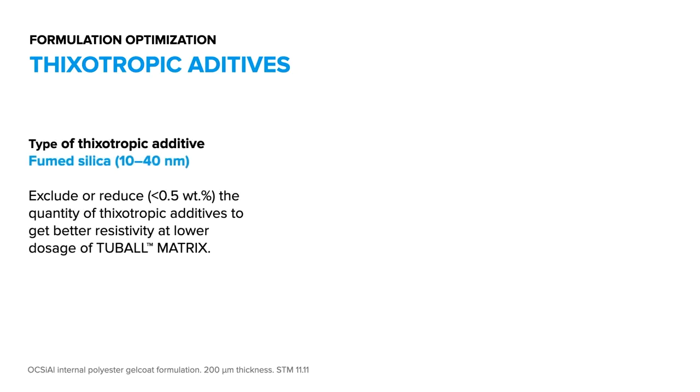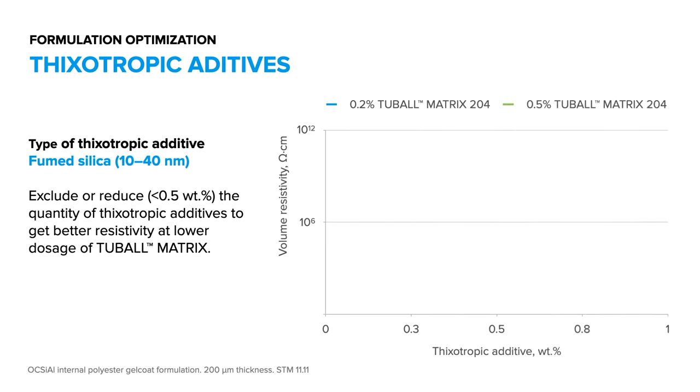Also, try to reduce the loading level of your thixotropic additive to get lower resistivities. As you can see from the graph, already an addition of 0.5% fumed silica or more led to a quick rise in your resistivity.